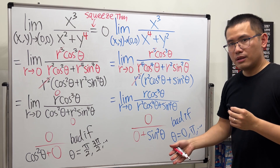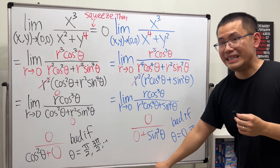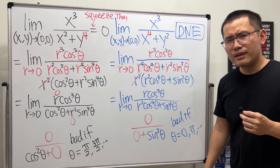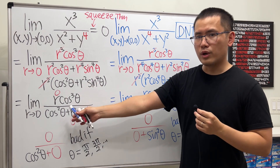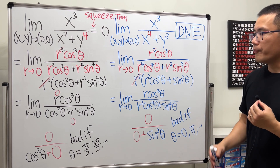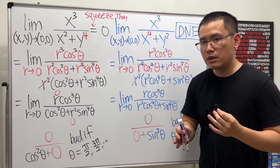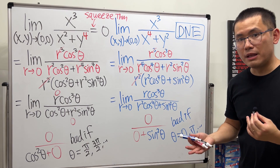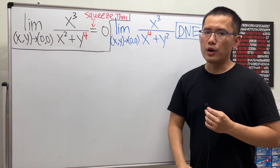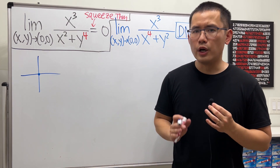For this new problem, even though we have zero on top divided by something, the answer is actually does not exist. The squeeze theorem won't work here. To show a limit does not exist, we must find two paths along which the function gives different limits.